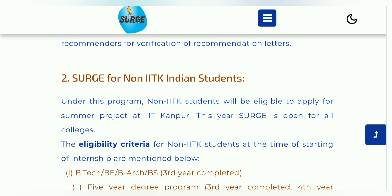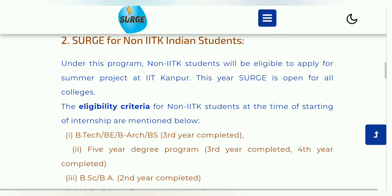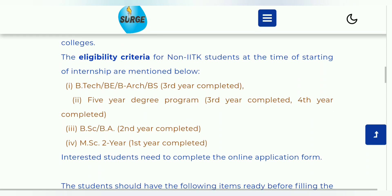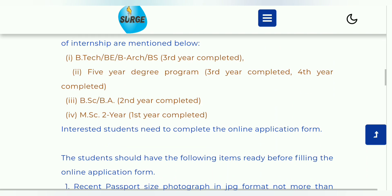SURGE for non-IIT Kanpur Indian students — मतलब जो students Indian हैं लेकिन IIT Kanpur में नहीं पढ़ते, उनके लिए eligibility almost same as the overseas students। B.E./B.Tech/B.S. जो 3rd year completed होकर 4th year में हैं, या 4th year complete करके final year में हैं, वो apply कर सकते हैं। 5-year degree program में जो 3rd year complete कर चुके हैं वो भी। B.Ec./B.E. students जो 2nd year completed होकर 3rd year (final year) में हैं — 5th या 6th semester में — वो apply कर सकते हैं। M.Sc. students जिनका 1st year completed है लेकिन 2nd year में pursue कर रहे हैं — 3rd या 4th semester में — वो भी apply कर सकते हैं।